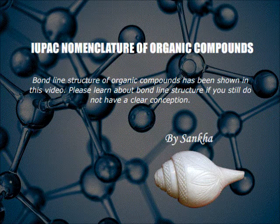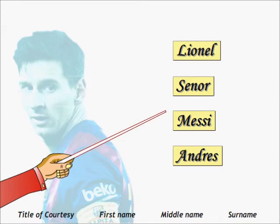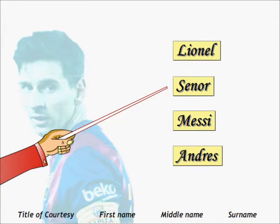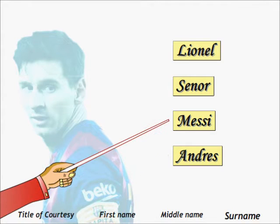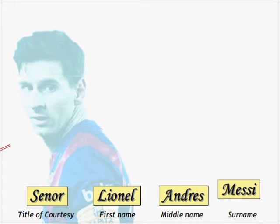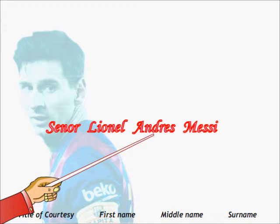What is the name of a human being? While writing the name of a human being, we follow some rules. Just look at the following four words. You are asked to arrange the words properly to write the correct name. Since these words are familiar, everybody can understand that this is the title of curtsy, this is the first name, this is the middle name, and this is the surname. We know how to arrange the words sequentially and write the full name. The rule is that the title of curtsy is written at the beginning, followed by the first name, then the middle name, and lastly the surname.